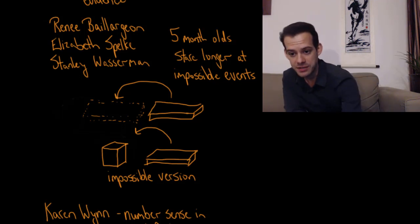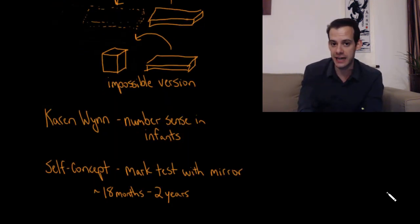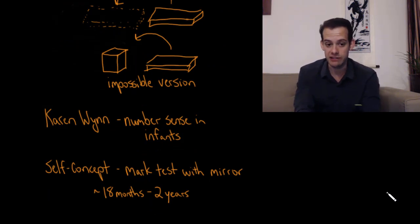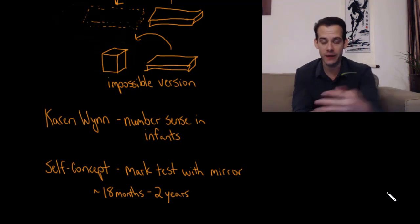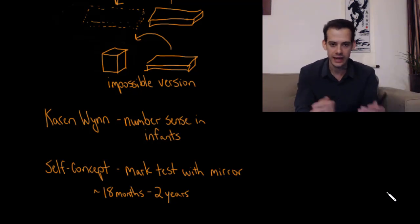Other demonstrations have found similar ways that infants might actually understand more than we initially suspected. Research by Karen Wynn has suggested that infants as young as about five months old have a sense of number. They can appear to count the things that they're seeing. You show them two objects and then you hide them behind the screen, and then you remove one of the objects so the child sees the object get taken away.